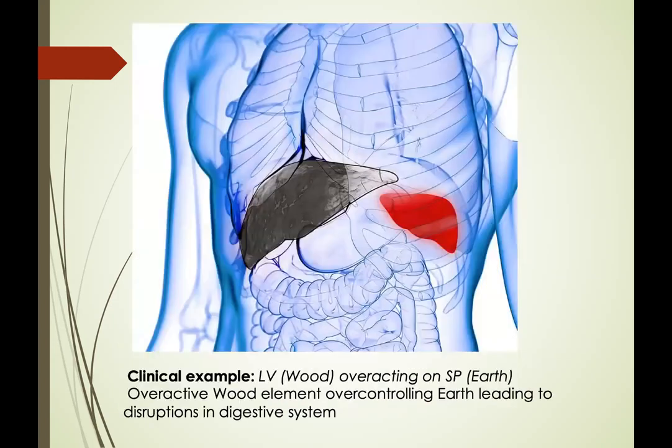A clinical example of this is the liver, or wood element, overacting on the spleen, or earth element. An overactive wood element overacting on the earth leads to disruptions in the digestive system — this is what happens when the element overacts and becomes excessive.